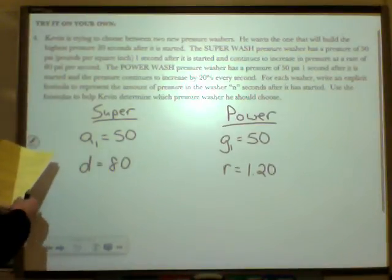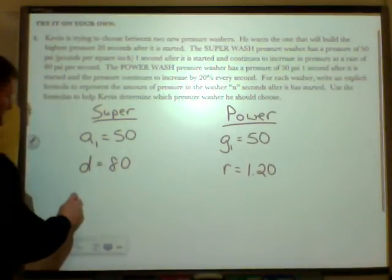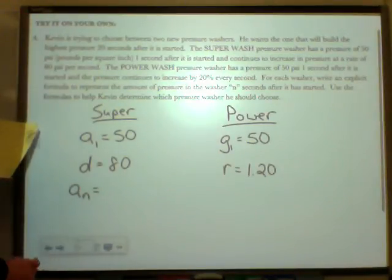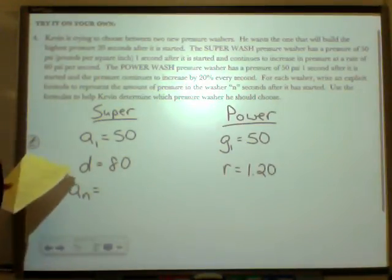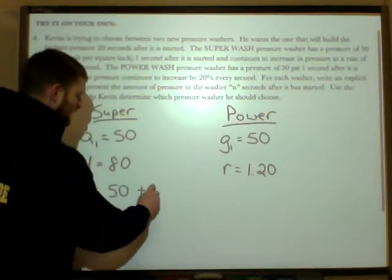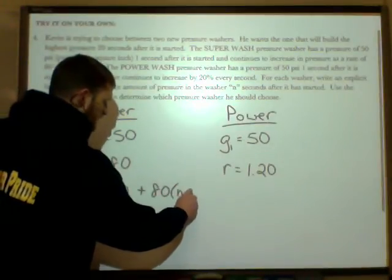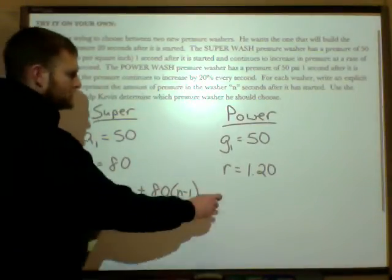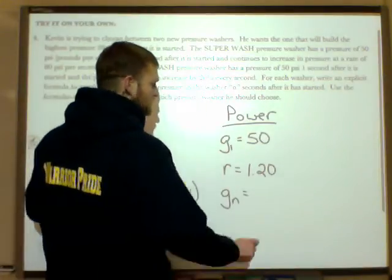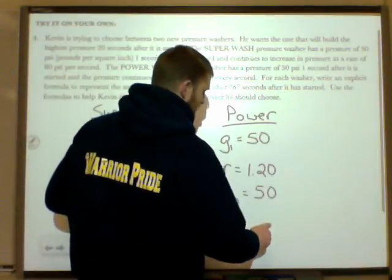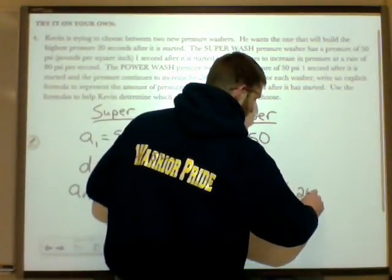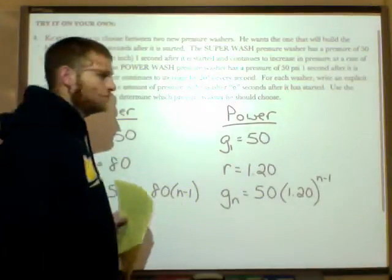And then any given term in the sequence could then be defined in the arithmetic sequence. Any given term, again using that explicit formula, would be that first term 50 plus 80 times n minus 1. Whereas over here on the geometric, any given term in the geometric would be again equal to that first term of the geometric sequence, but now that 1.20 to the power of n minus 1.